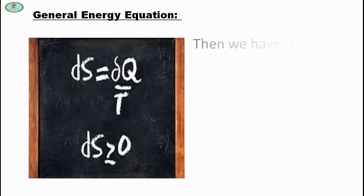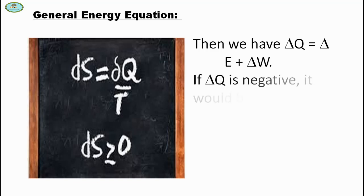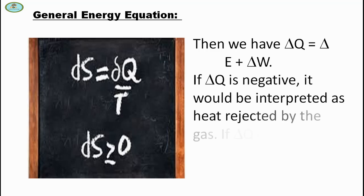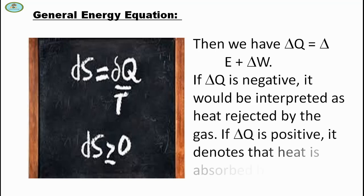Therefore, we have delta Q equals delta E plus delta W. If delta Q is negative, it would be interpreted as heat rejected by the gas.